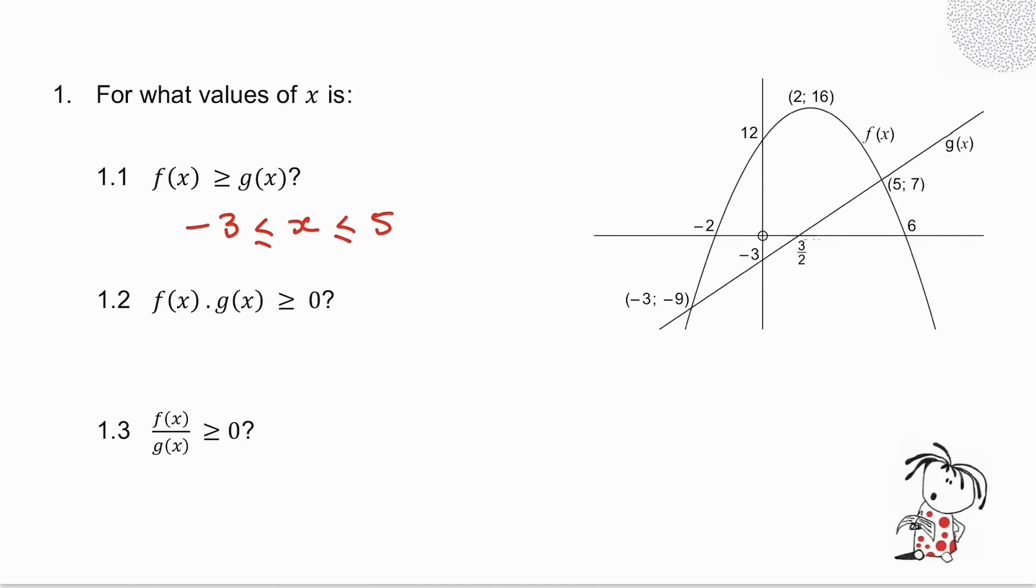The next question, where is f(x) times g(x) greater than or equal to 0? Well, if you want something to be positive, you know that a plus times a plus is a plus, and a minus times a minus is a plus. So you want to see where are both graphs positive or where are both graphs negative. Now my parabola is positive there, there, and my straight line is positive there. So where are both graphs positive? They're both positive between those two points. In other words, between 3 over 2 and 6, they are both positive. Now, we will have a look at the endpoints just now.